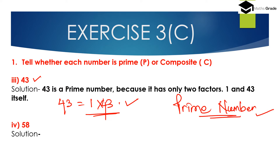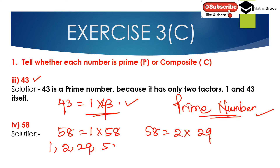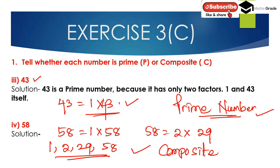Next, 58. One multiplied by 58 is 58, and 2 multiplied by 29 is also 58. So the factors of 58 are 1, 2, 29, and 58 — four factors in total. Since 58 has more than two factors, it is not a prime number. Numbers which are not prime are called composite numbers. So 43 is a prime number and 58 is a composite number.